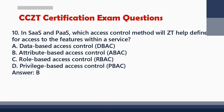Question 10: In SaaS and PaaS, which access control method will ZT help define for access to the features within a service? A. Data-based access control (DBAC). B. Attribute-based access control (ABAC). C. Role-based access control (RBAC). D. Privilege-based access control (PBAC). Answer: B.